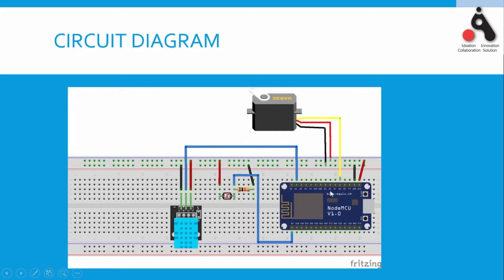In the circuit diagram, the NodeMCU is connected to the LDR sensor through a 10k ohm resistor. Pin A0, the only analog pin of NodeMCU, is connected to get analog data from the LDR sensor. The DHT11 digital sensor uses digital pin D1 — it is a three-pin sensor with one rail connected to 3.3V and the other to ground. The servo motor's control pin is connected to pin D8. This is the complete circuit diagram of this project.